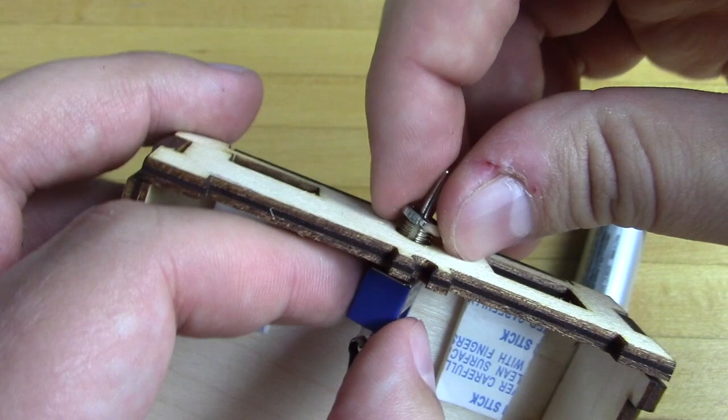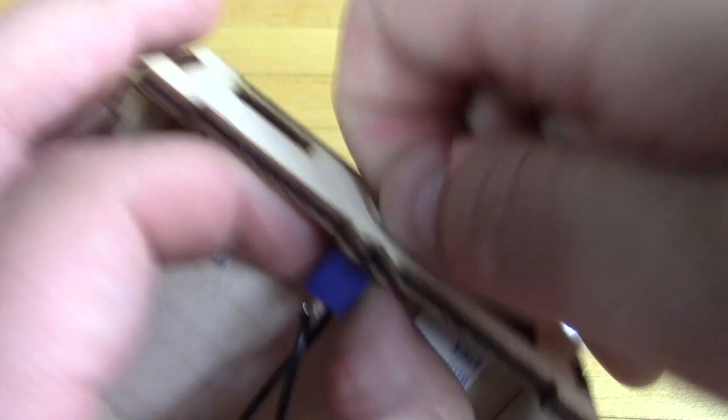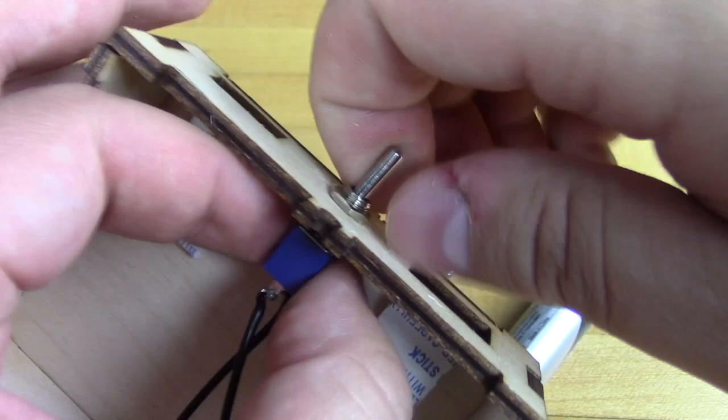Before we stick any parts down, we're going to get the switch in place. Use the two nuts to firmly secure the switch into the panel mount. Make sure it's nice and snug in place and doesn't wiggle around in any weird motions or degrees.